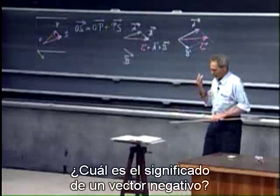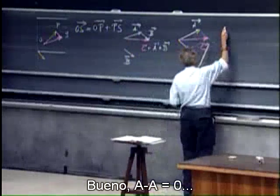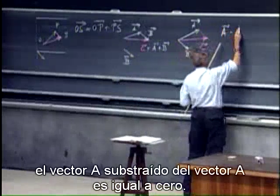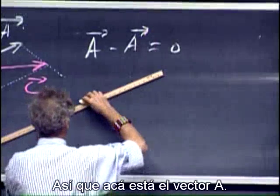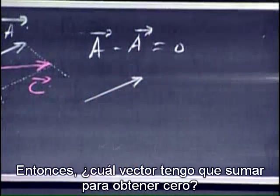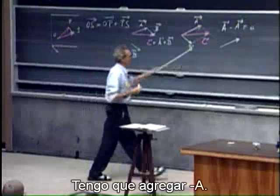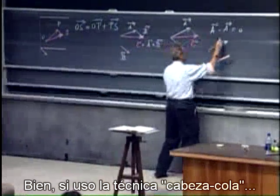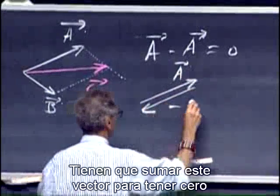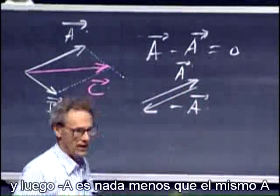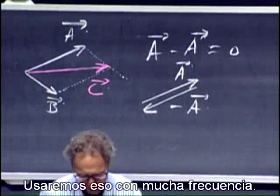What is the meaning of a negative vector? Well, A minus A equals zero. So here is vector A — which vector do I have to add to get zero? I have to add minus A. If you use the head-tail technique, you have to add this vector to have zero, so this is minus A. Minus A is nothing but the same as A but flipped over 180 degrees. We will use that very often.